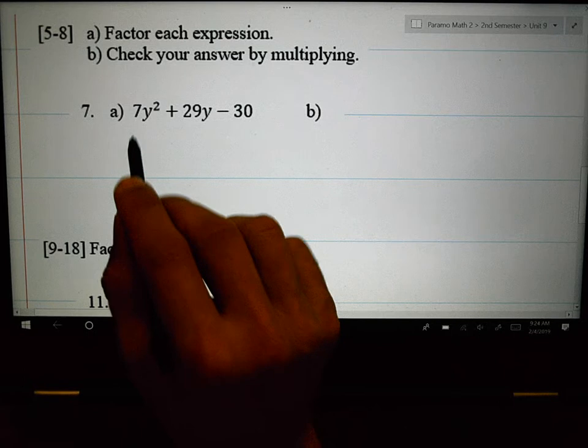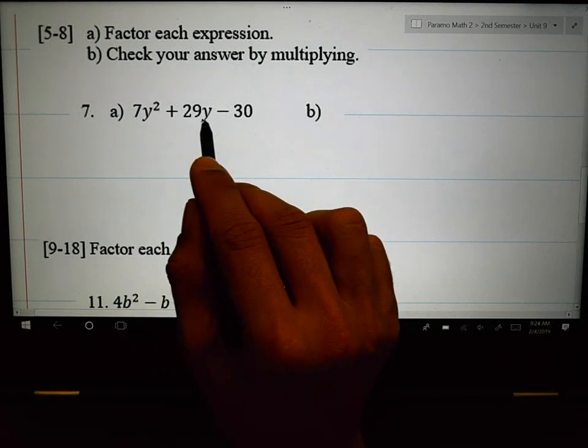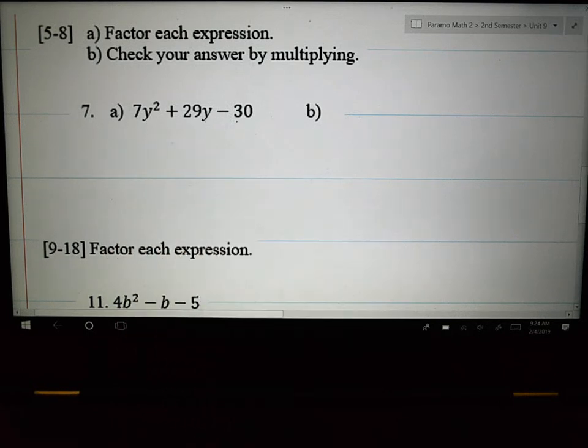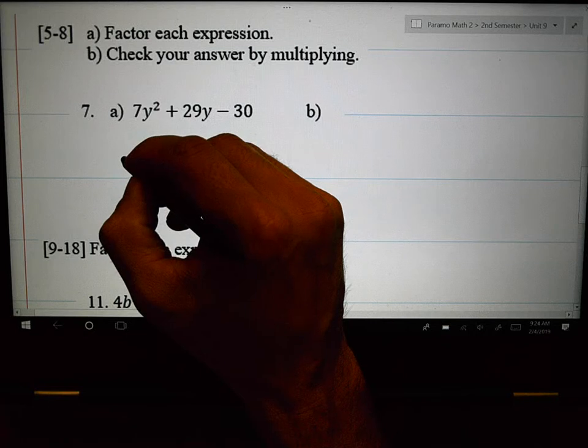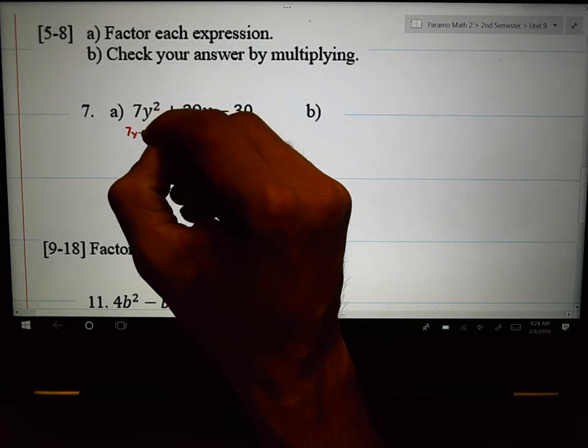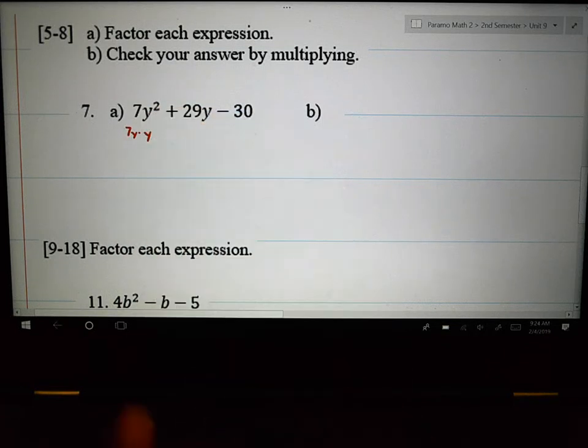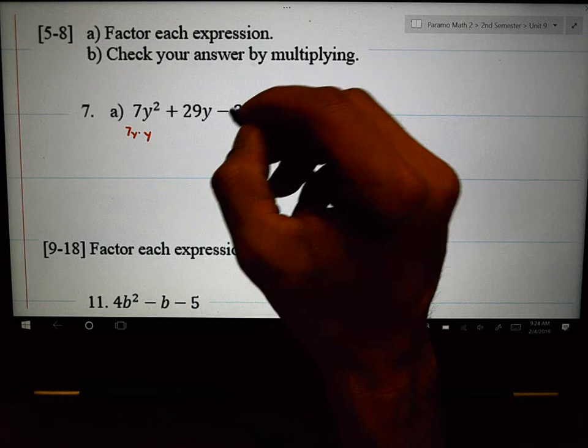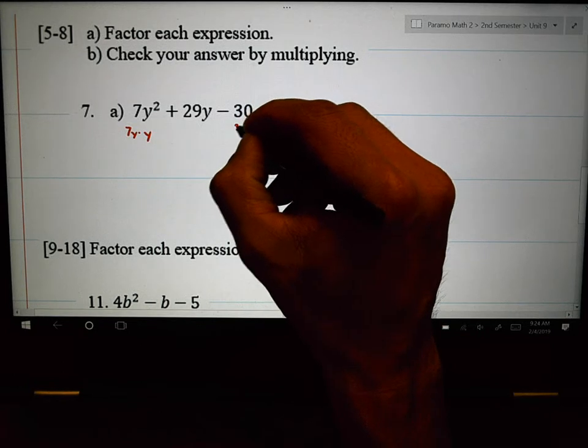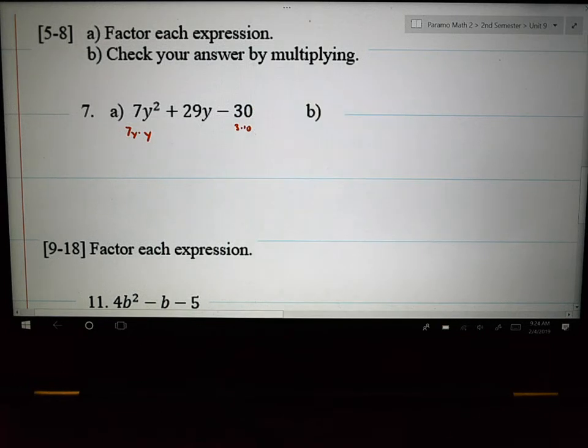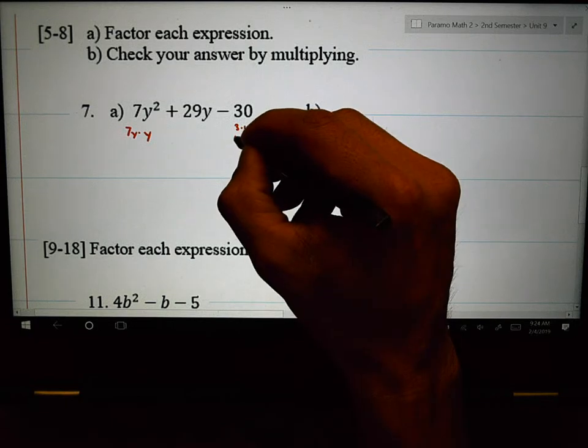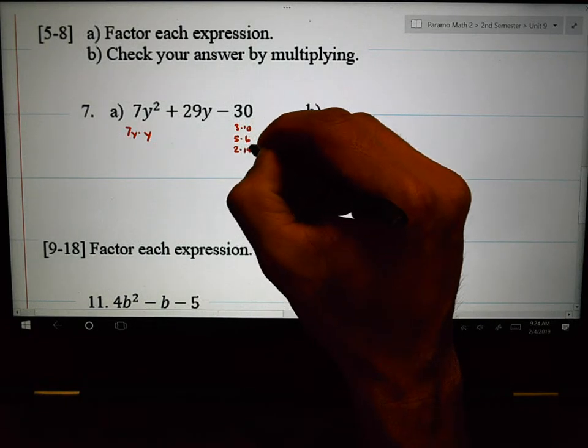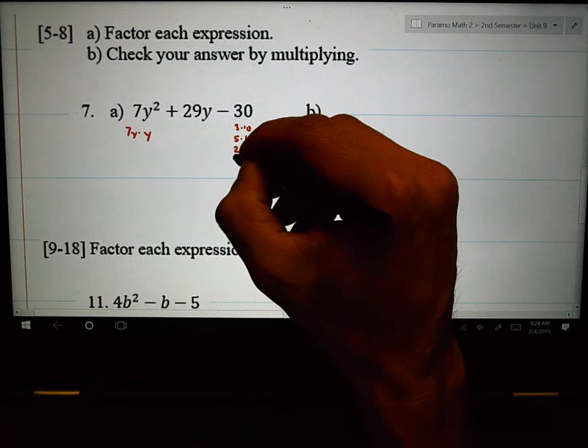Here we go. Number 7. 7y squared plus 29y minus 30. A lot of different ways to do that. First thing I'm going to do is I'm going to list. It could be 7y times y. Good thing that that is a prime number. You're going to start loving the prime number side. And then the composite side, you're going to say, well, it could be 3 times 10.